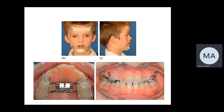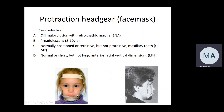This patient is wearing a Delaire-type face mask. The elastics can go directly from left extra-oral hook to left intra-oral hook and right to right, or they can cross to opposite sides. Sometimes crossing is used because the elastics may irritate the corners of the mouth if the hooks are a little wide. It is important to make sure the elastics do not disturb the corners of the mouth.